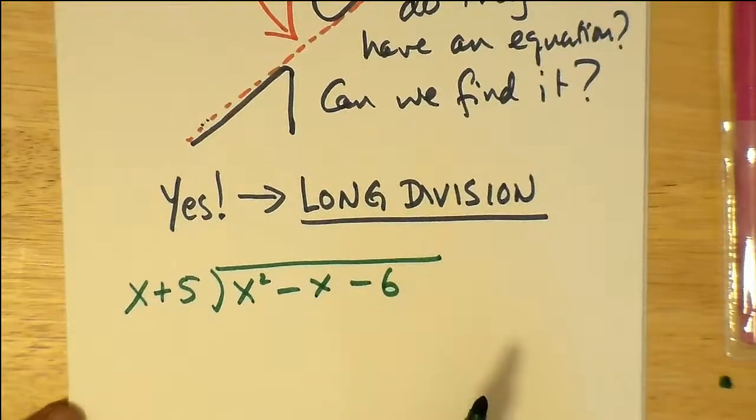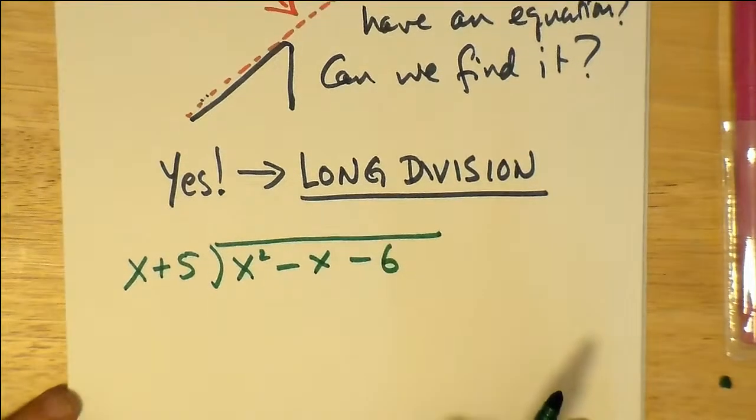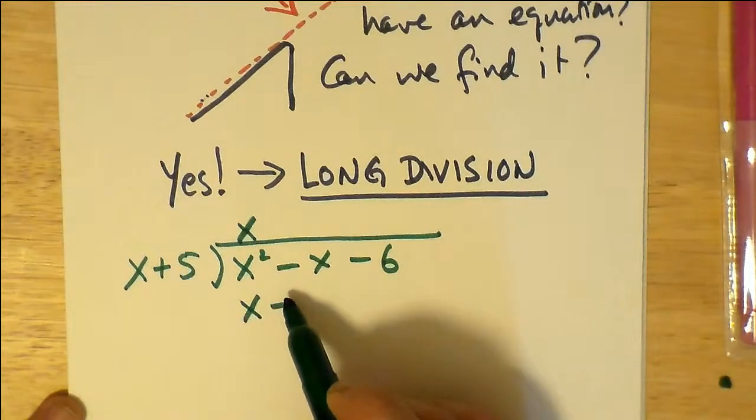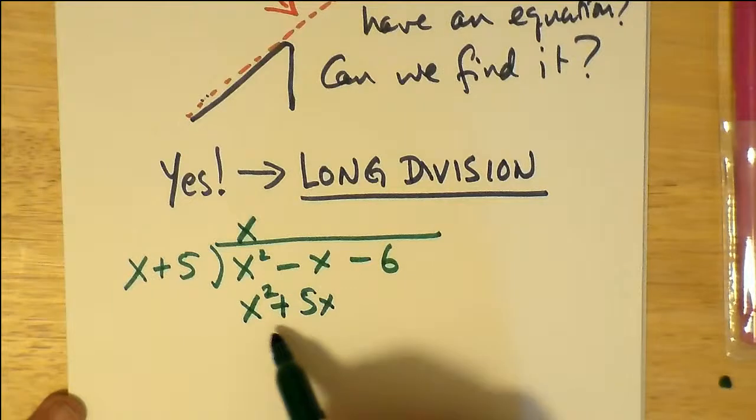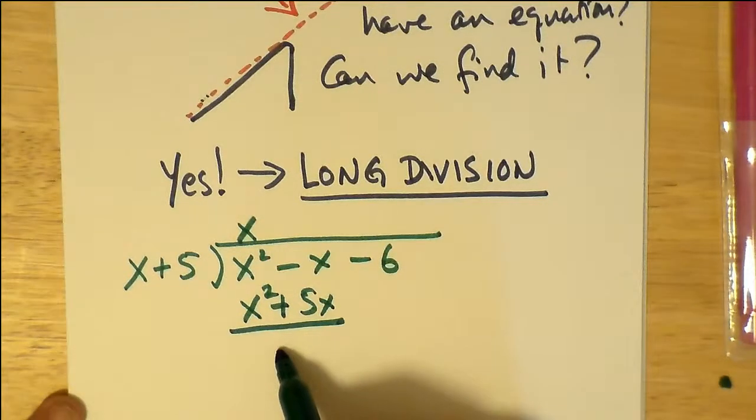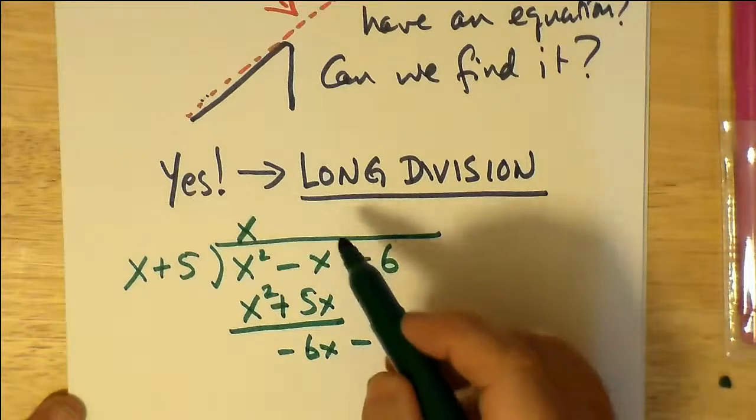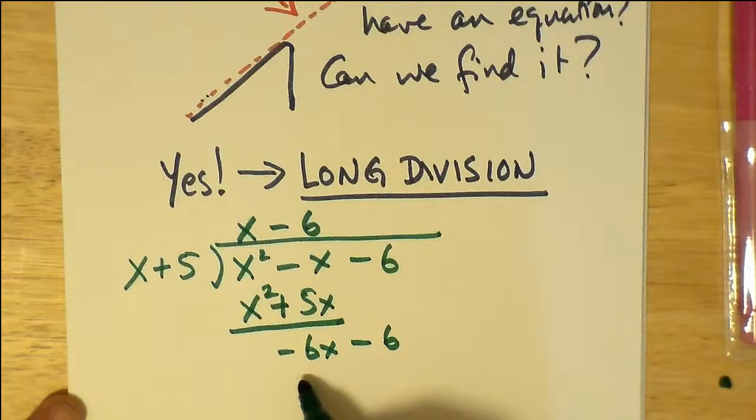So, using long division, we have our polynomial here. x squared minus x minus 6 divided by x plus 5. Well, for the x squared part, it goes in x times, and we get x squared plus 5x. When we subtract 5x from negative x, we get negative 6x. We bring down the negative 6. And that allows us to subtract 6 up top.